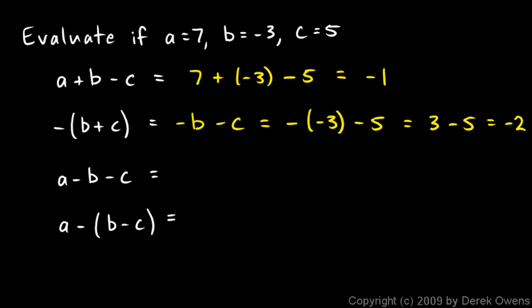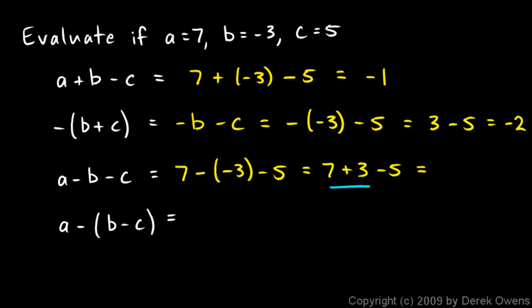This next example: a minus b minus c. We're just going to rewrite this putting in the values. a is 7, then minus b — b is negative 3 — and then minus c is minus 5. The minus negative 3 is the same as plus 3, so this is the same as 7 plus 3 minus 5. 7 plus 3 is 10, and 10 minus 5 is 5. So 5 is our answer.